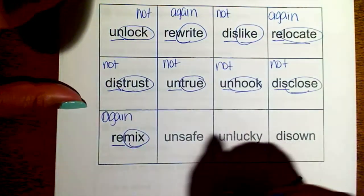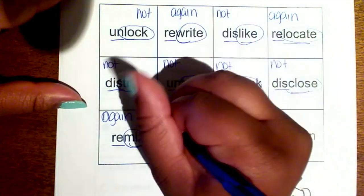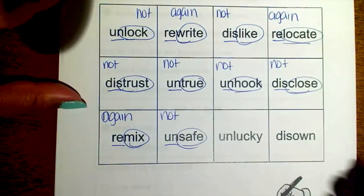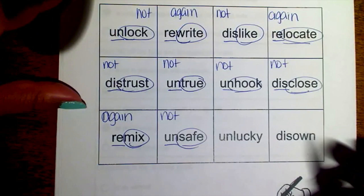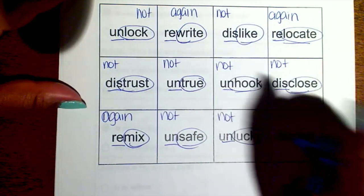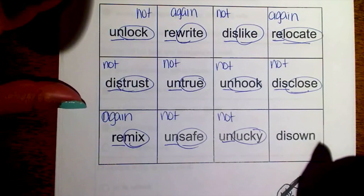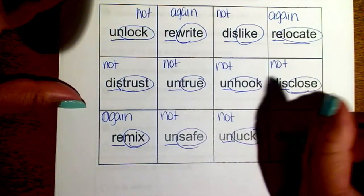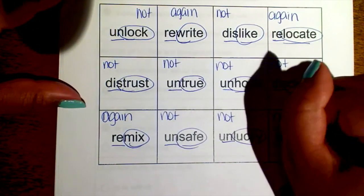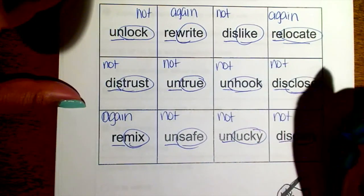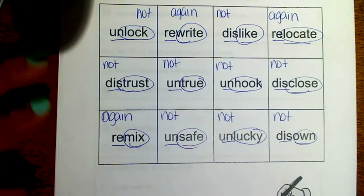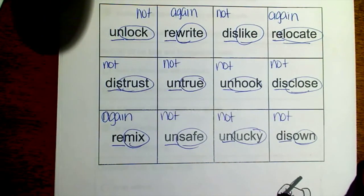'Remix' means mix it again. 'Un-' is a prefix that means 'not,' so if something is 'unsafe' it's not safe, and if you're 'unlucky' you're not lucky. 'Dis-' is a prefix that means 'not,' so to 'disown' someone means not to own them anymore. And that's all of the language arts.